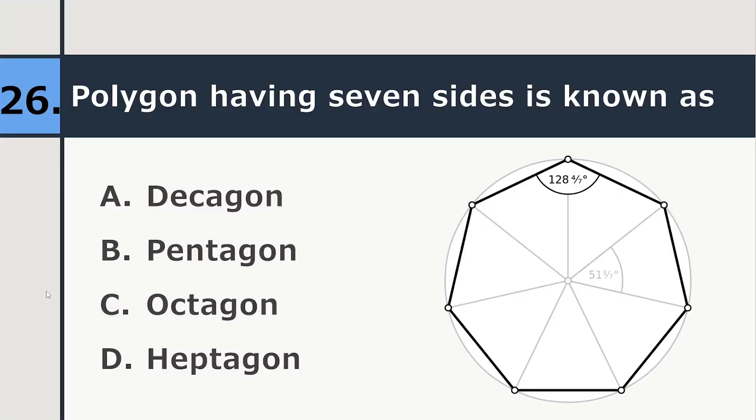Polygon having seven sides is known as decagon, pentagon, octagon or heptagon. So correct answer is heptagon.